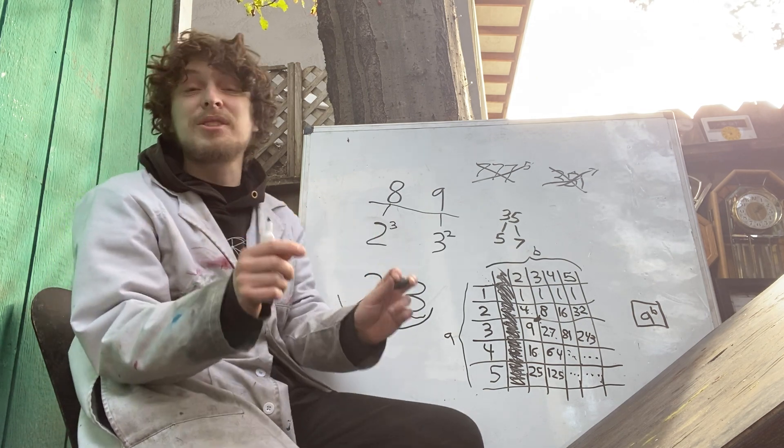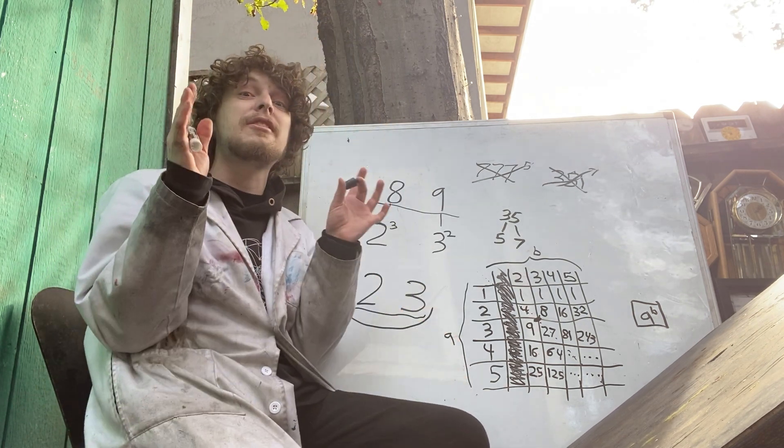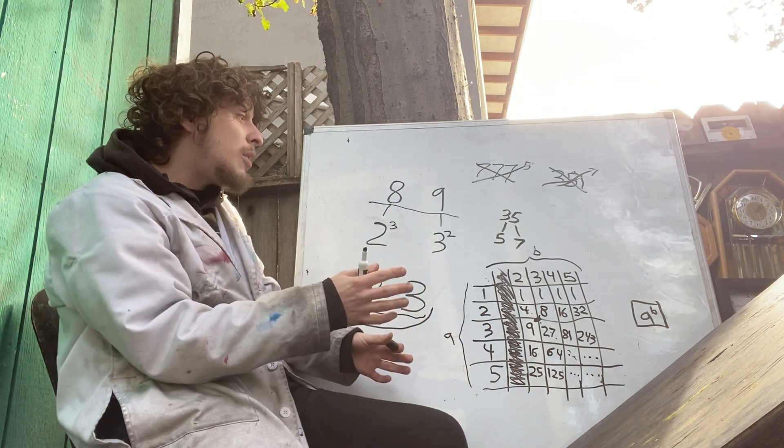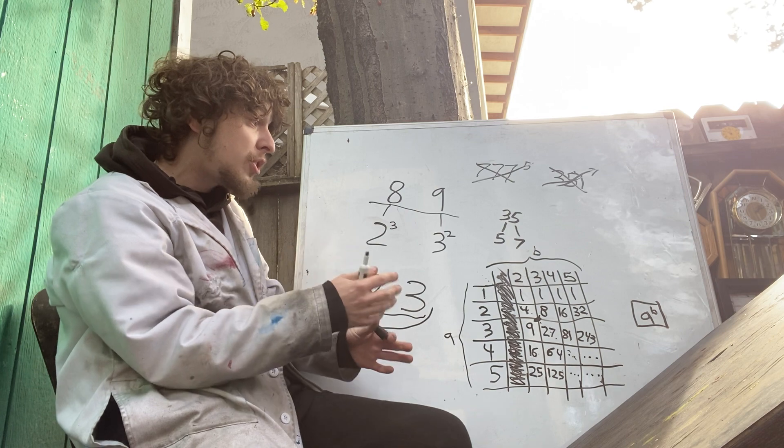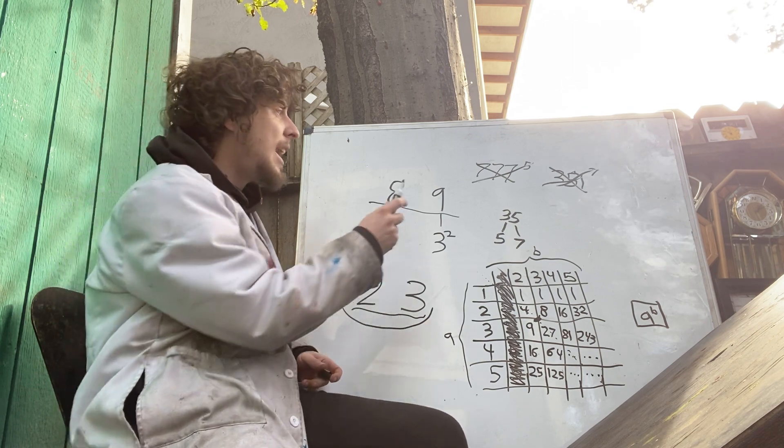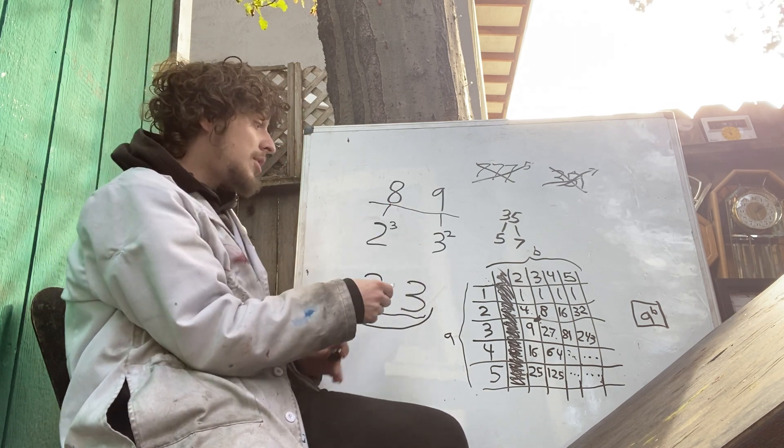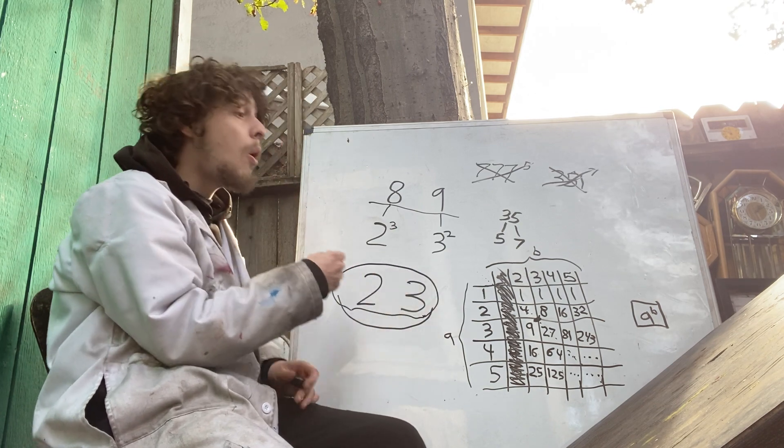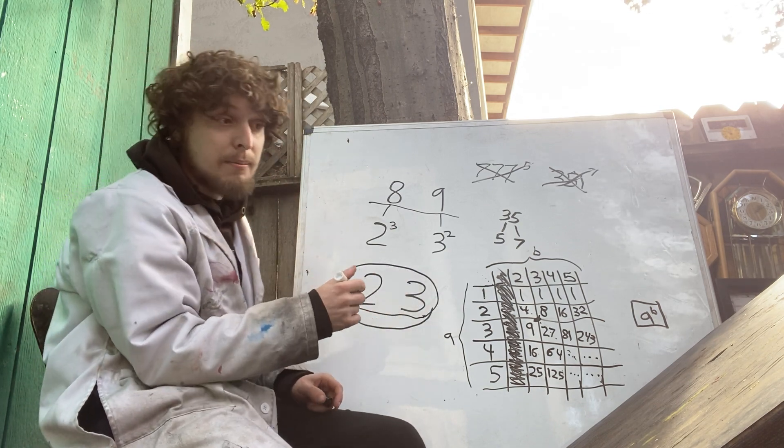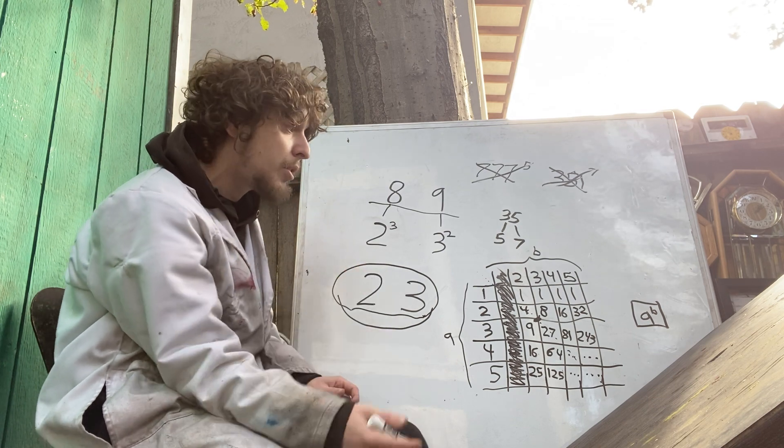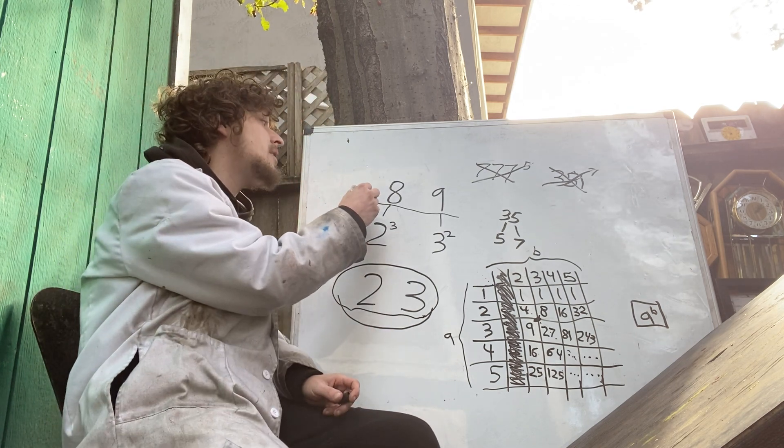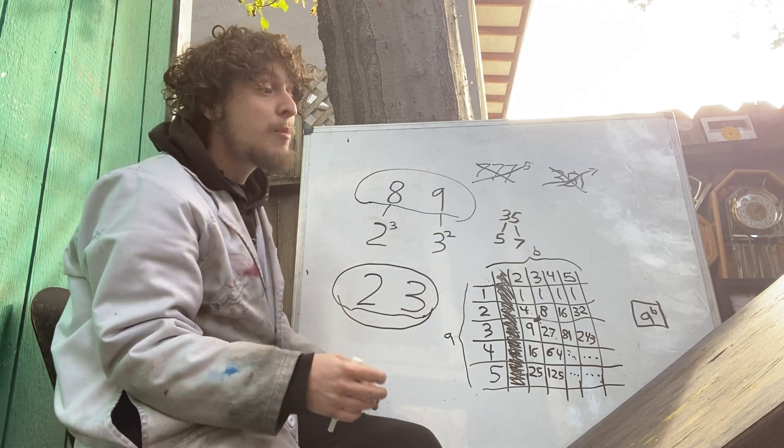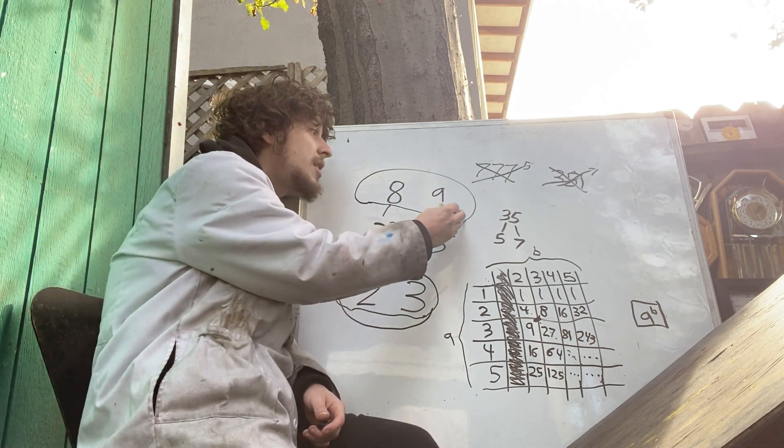And then in 2002, a mathematician finally proved it. So in 2002, it was officially confirmed that 8 and 9, similar to how 2 and 3 are the only primes that land on neighbors, 8 and 9 have been confirmed to be the only perfect powers that land on neighbors.